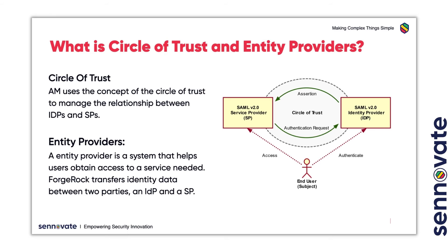An entity provider is a system that helps users obtain access to a service needed. ForgeRock transfers identity data between two parties, an IDP and an SP. A service provider needs the authentication from the identity provider to grant authorization to the user. An identity provider performs the authentication that the end user is who they say they are and sends that data to the service provider along with the user's access rights for the service.